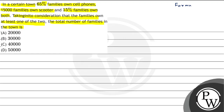To solve this question, I am going to use this formula. The formula is: N of A union B equals N of A plus N of B minus N of A intersection B.